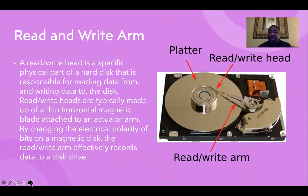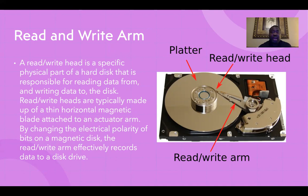The read/write head is a specific physical part of the hard disk that is responsible for reading data from and writing data to the disk. This is the read/write head, and this one is the arm right here. The read/write heads are typically made up of a thin horizontal magnetic blade attached to the actuator arm. By changing the electrical polarity of bits on a magnetic disk, the read/write arm effectively records data to the disk drive.